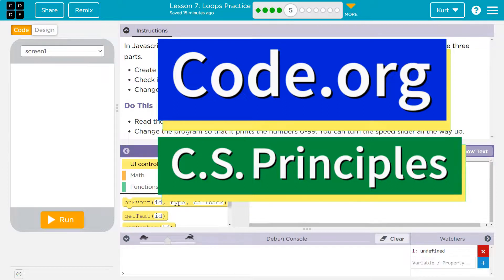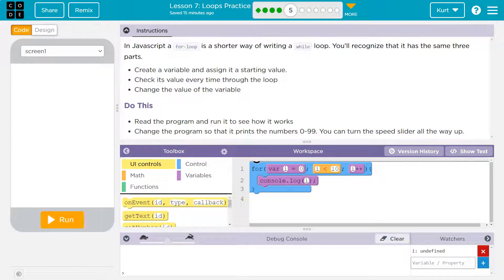This is code.org, that's what we're working on. In JavaScript—that's the name of the programming language we're using, although the S should be capitalized—a for loop is a short way of writing a while loop.